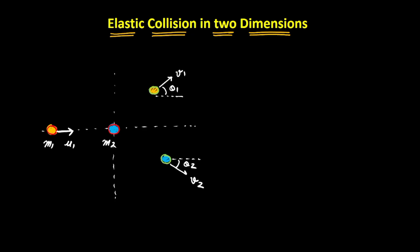We can resolve these velocities into two components. The horizontal component near theta1 would be v1 cos theta1 and the vertical component would be v1 sin theta1. Similarly, we can resolve v2: the horizontal component would be v2 cos theta2 and the vertical component would be v2 sin theta2.